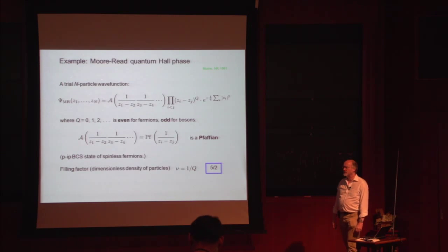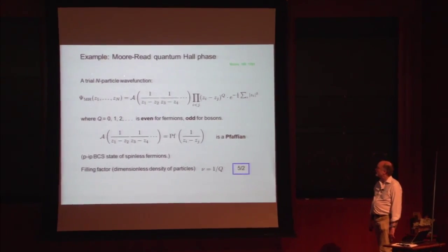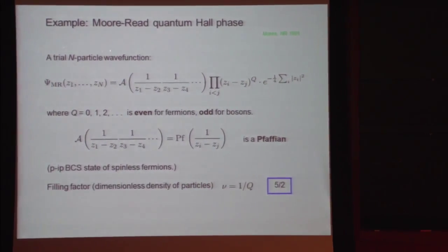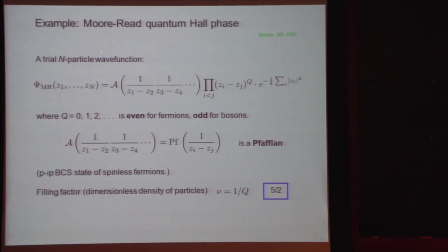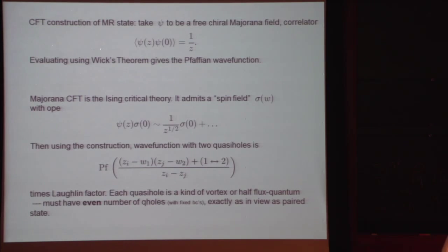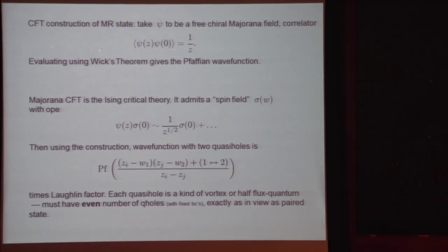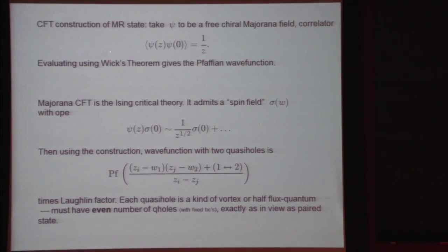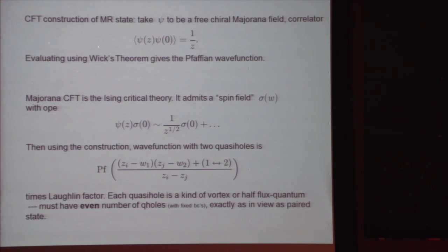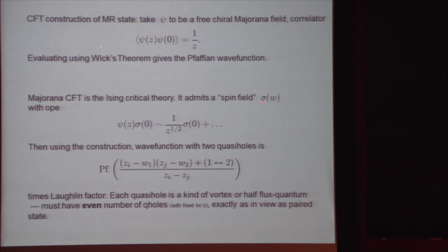I'm going to continue where I left off yesterday. I was describing the example of our Moore-Read or Pfaffian state. In the conformal field theory construction, we can obtain this by taking Psi to be the Majorana field with the usual correlator and expanding using Wick's theorem, and we obtain the Pfaffian. There's also a spin field in this theory which is chiral, such that the operator product of Psi with Sigma has a 1 over square root of Z.